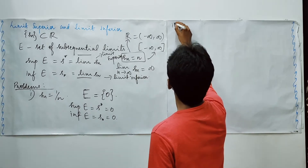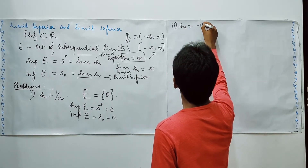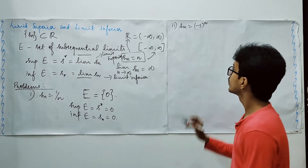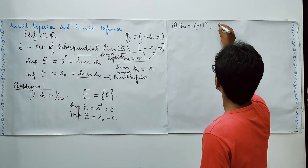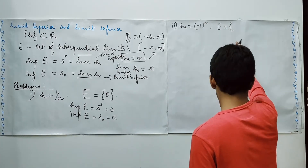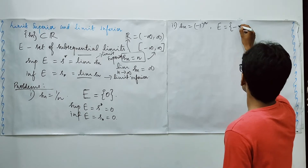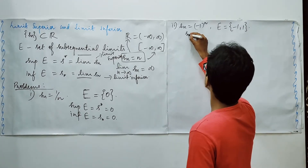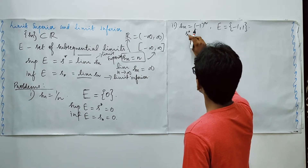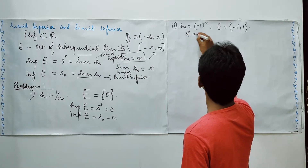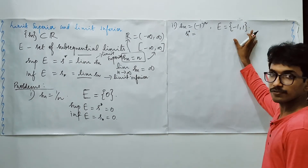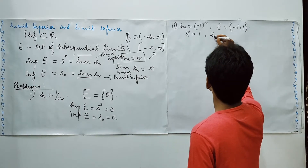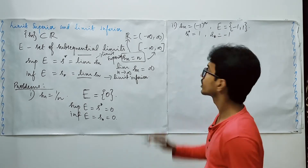Now let Sn = (−1)^n. Here the possible values can be either −1 or 1. So S upper star is the supremum of this set, which is 1, and S lower star is the infimum, which is −1.